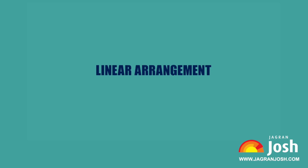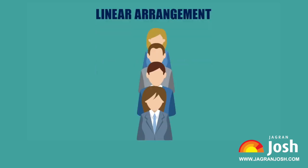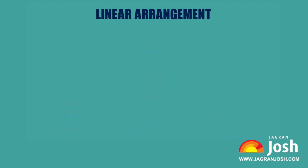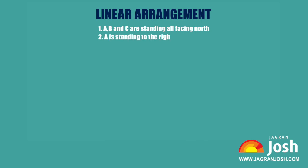In linear arrangement, a student is required to arrange different people in a line or number of lines. The people may be sitting or standing in a row or a set of rows. Let us see some statements to understand this type of arrangement: A, B, and C are standing, all facing north. A is standing to the right of B.